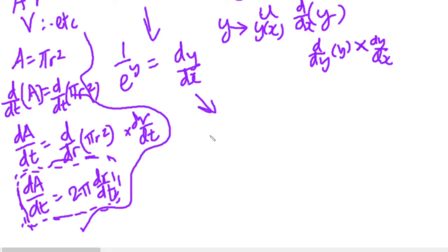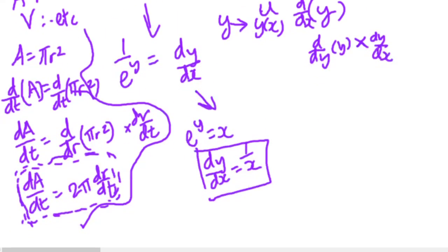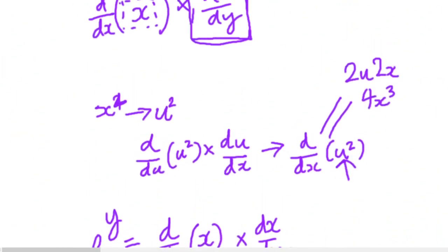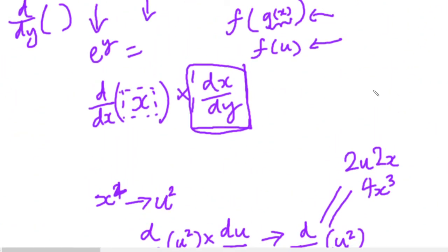1 over e to the y is equal to dy by dx and e to the y, as we know, is x. So dy by dx is x. We've established that the differential is 1 over x, because it's 1 over e to the y. So we've established that the differential of ln x with respect to x is 1 over x. So that means integrating it must get us to integrating 1 over x dx ought to get us to ln x plus c. But what's this? What have I drawn here? Absolute value signs.